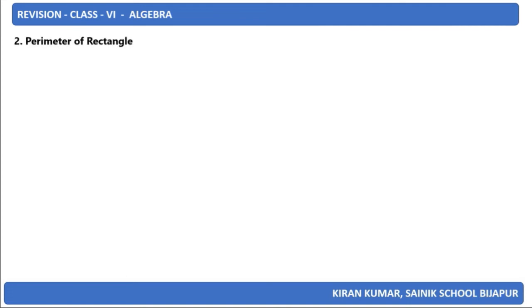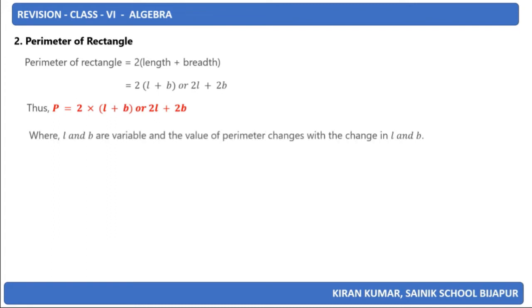Look at the perimeter of a rectangle. Perimeter of rectangle is given by 2 times (length + breadth). If the length is represented using small letter L and breadth using small letter B, it will be 2(L+B) or 2L+2B. Here L and B are variables, and the value of perimeter changes with the change in L and B.